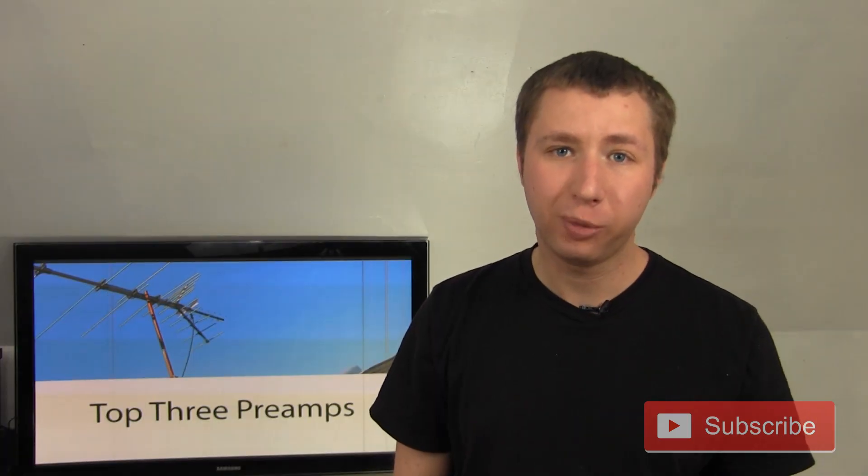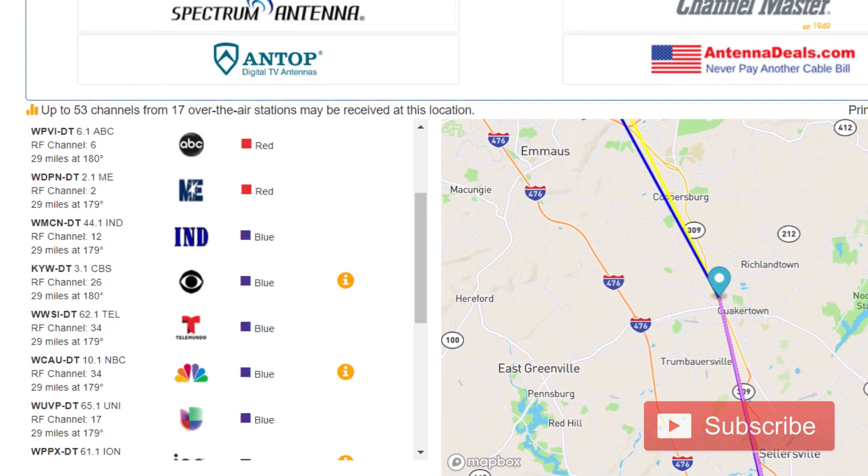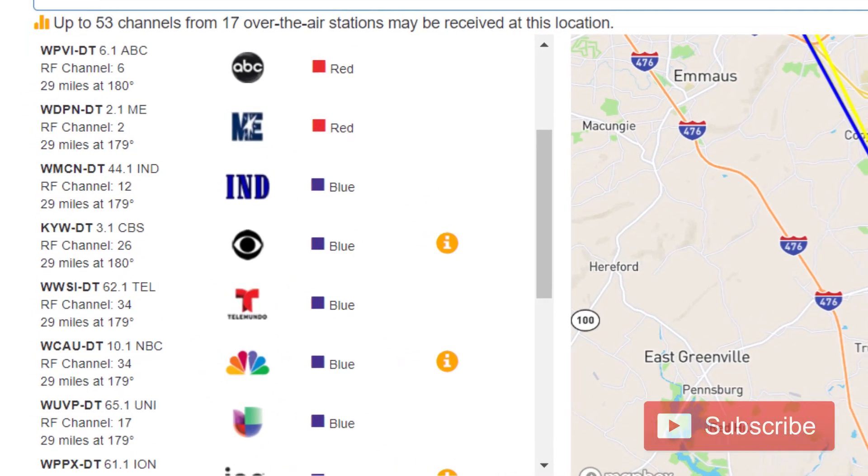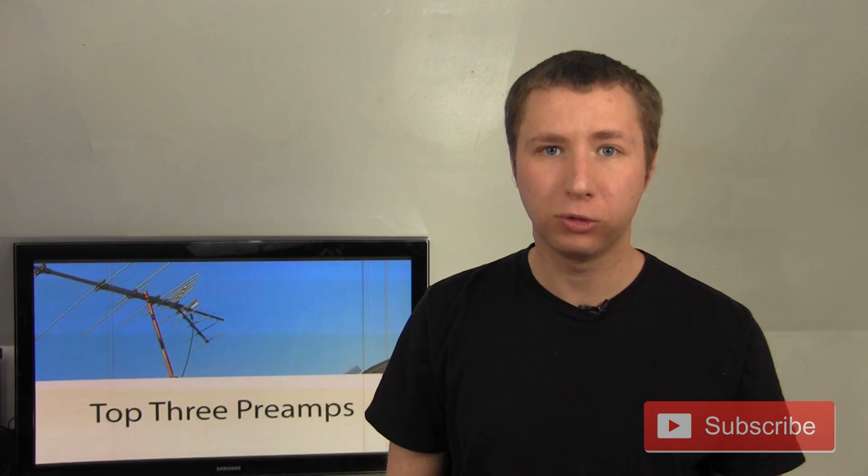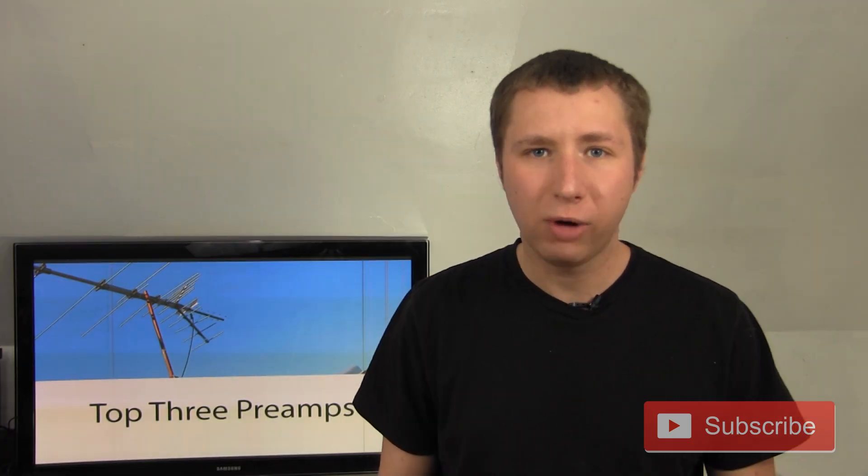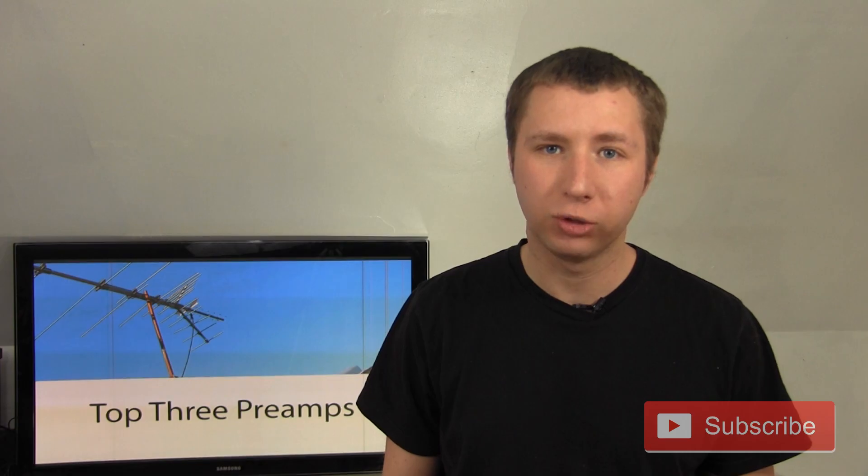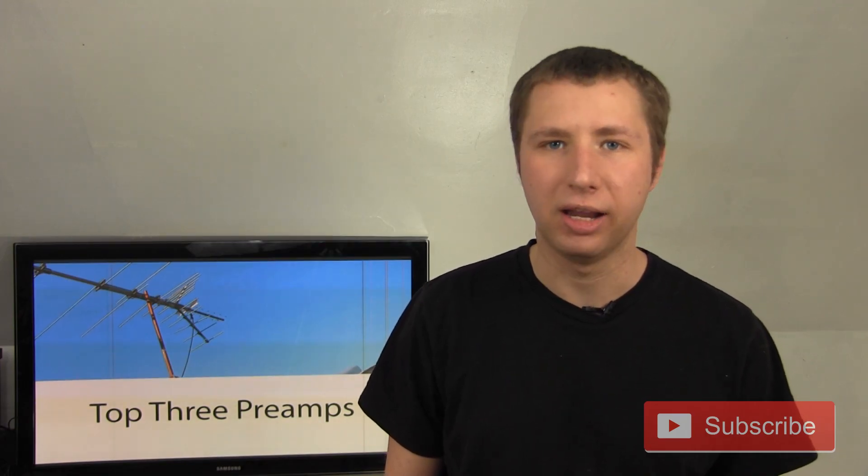One way you can determine if a preamp is necessary for your scenario is if you go to antennaweb.org and type in your address, it'll show you what the signal strengths are like for each TV station that reaches your area. And if you see blue or purple, those channels will most likely need a preamplifier to amplify the signal, so that way you don't lose some of the signal, which can result in more dropouts or losing the station completely, depending on how weak it is.